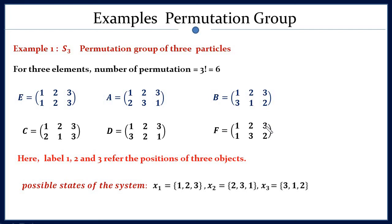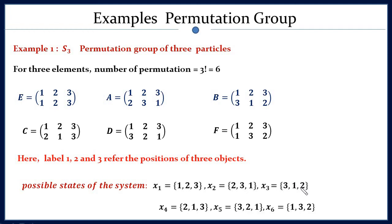For a system containing three particles, the possible states are: x1 = (1,2,3): particle 1 at position 1, particle 2 at position 2, particle 3 at position 3; x2 = (2,3,1): particle 1 at position 2, particle 2 at position 3, particle 3 at position 1; x3 = (3,1,2): particle 1 at position 3, particle 2 at position 1, particle 3 at position 2. Similarly, there are three more states, giving a total of 6 possible states.